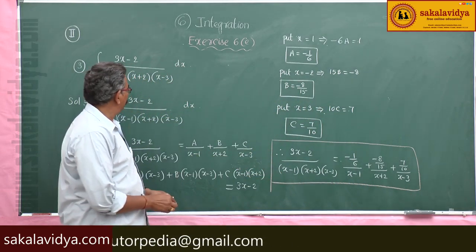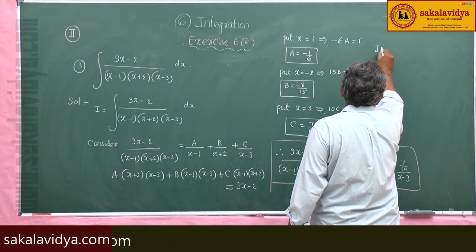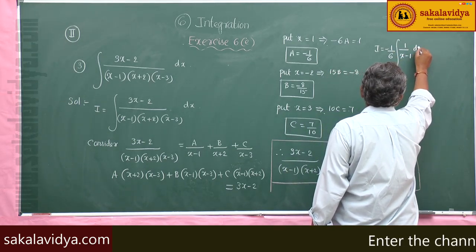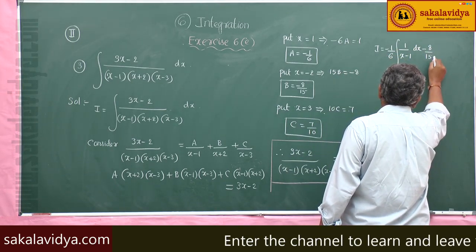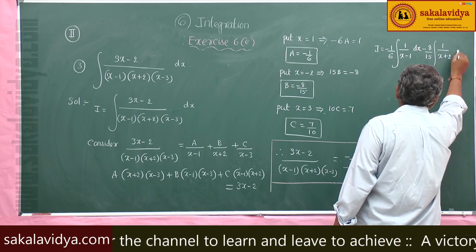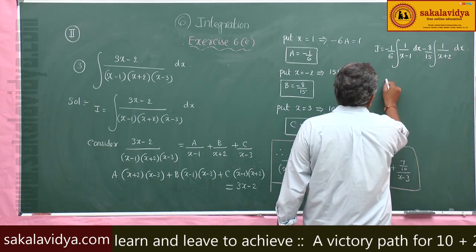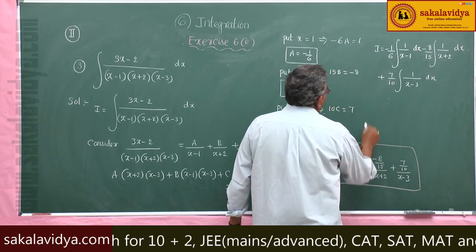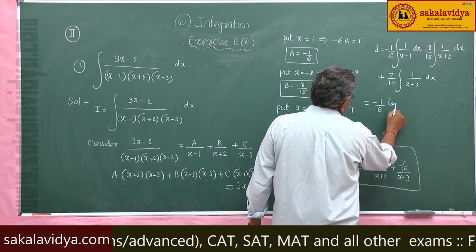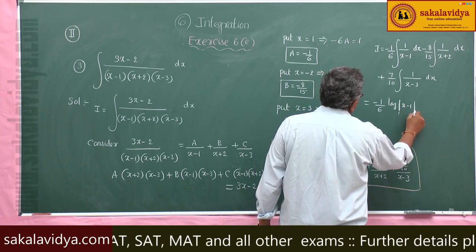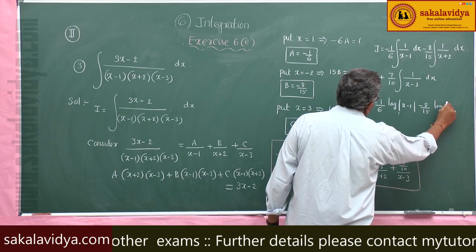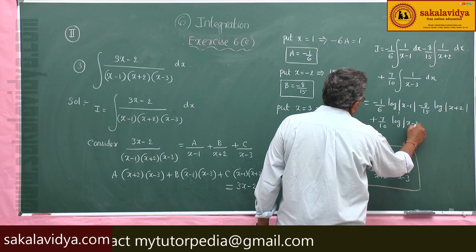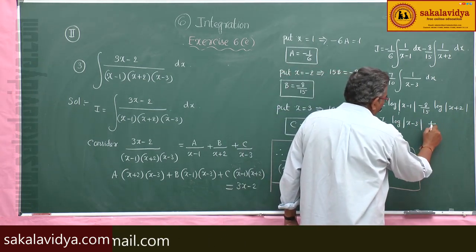Now we have to find out the integral. So I equals (minus 1/6) integral of 1/(x minus 1) dx minus (8/15) integral of 1/(x plus 2) dx plus (7/10) integral of 1/(x minus 3) dx. This equals (minus 1/6) log|x minus 1| minus (8/15) log|x plus 2| plus (7/10) log|x minus 3| plus constant of integration.